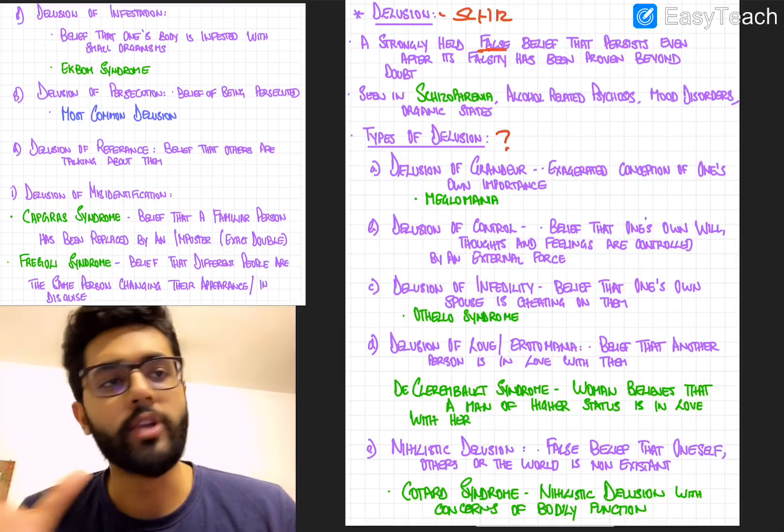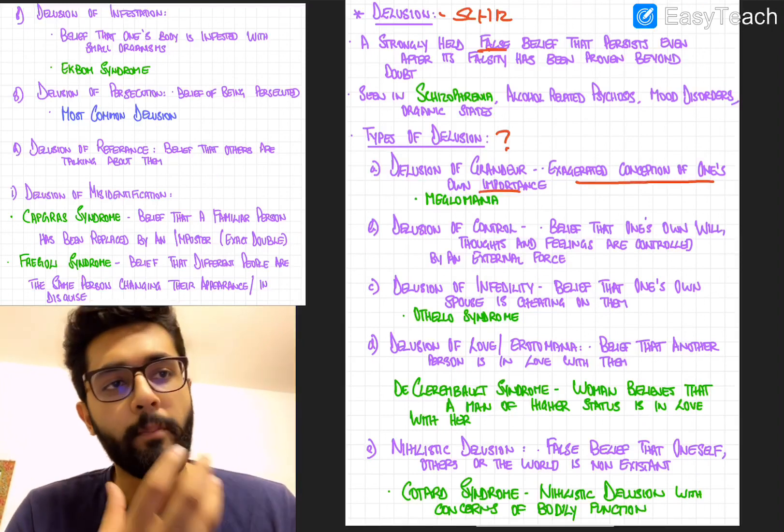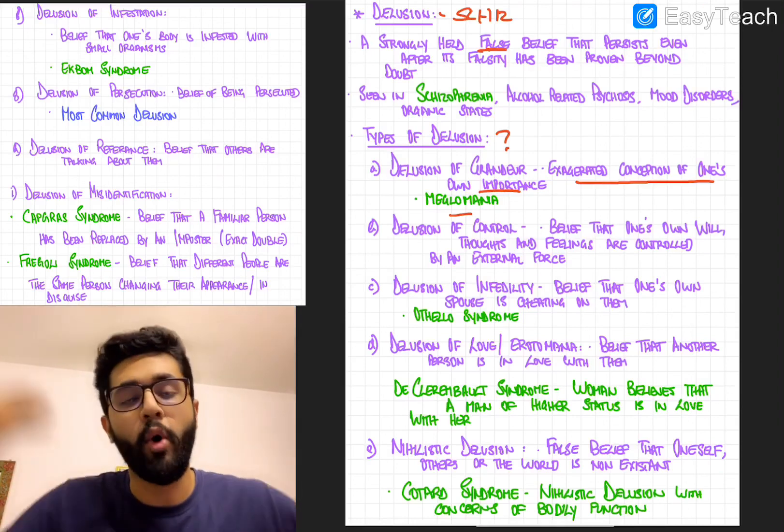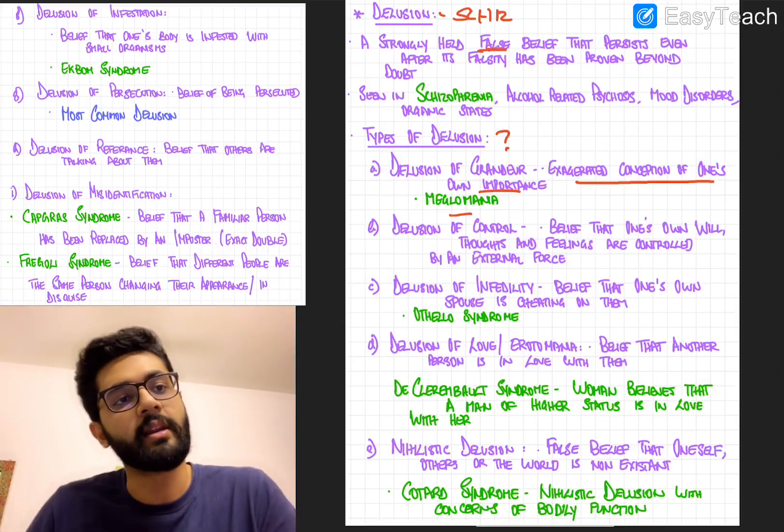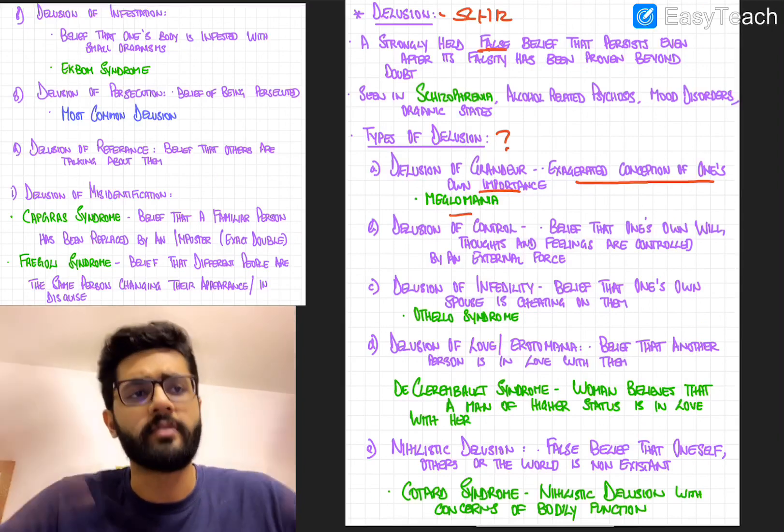So firstly, you have something called delusion of grandeur, which is an exaggerated conception of one's own importance, also called megalomania. So the individual feels he's of higher status or he feels he's more important than he actually is in real life. So it's a delusion of being grand, so called delusion of grandeur.